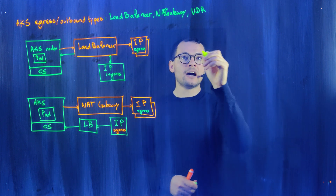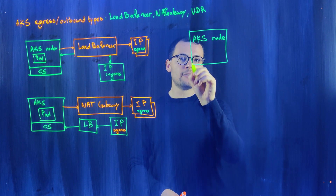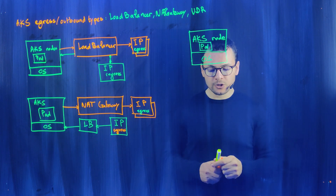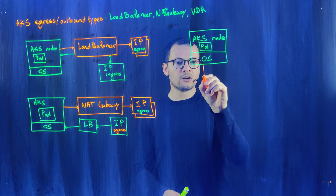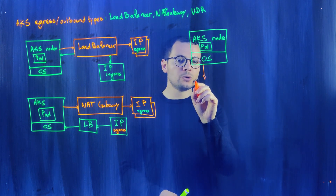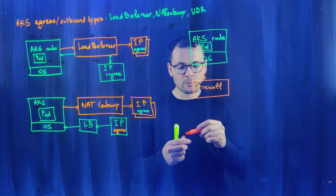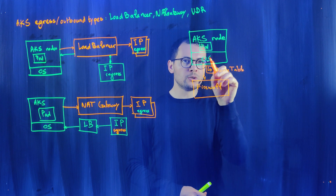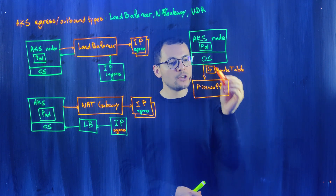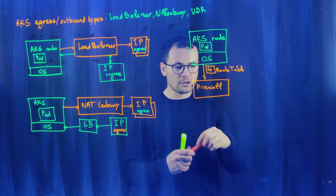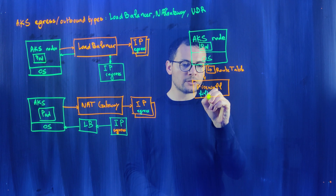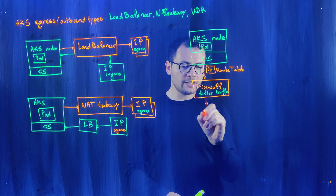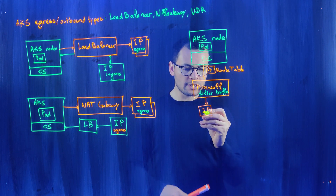Here's how UDR works: the AKS node has an OS needing updates and one or more application or system pods. All egress traffic leaving the cluster is directed to an Azure Firewall. This is enabled by the UDR mode and a route table — a route rule is created that forces all egress traffic from the AKS subnet through the firewall's private IP address. The egress traffic then exits the firewall through its own public IP address.